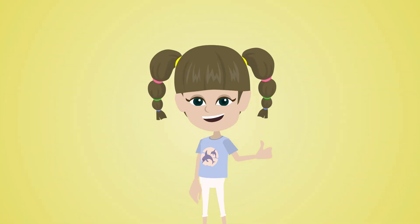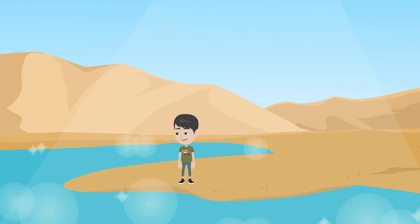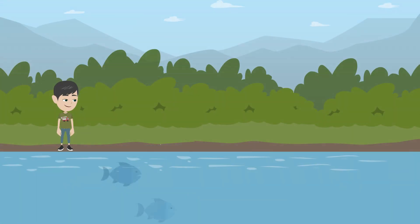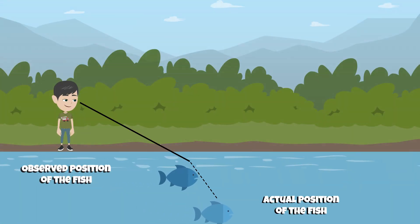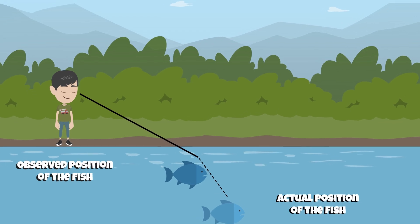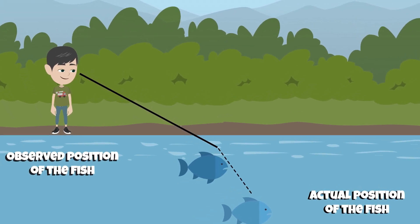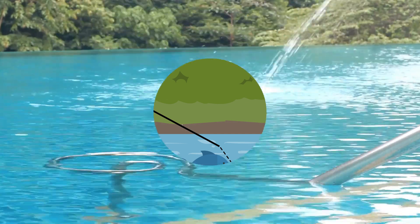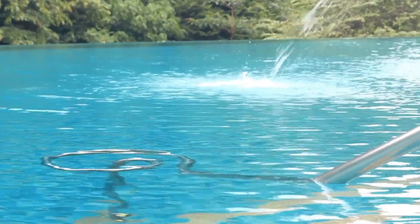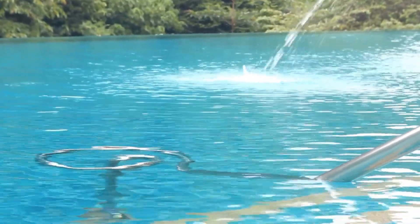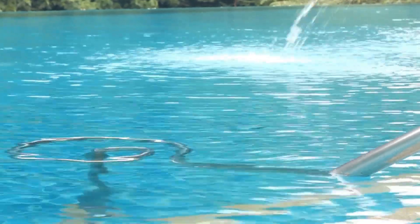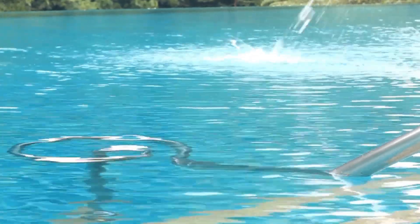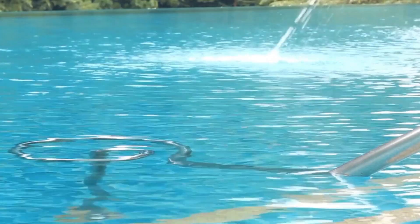So are you ready to jump into today's hands-on experiment? We've prepared a scenario where a person observes a fish in a lake. The diagram shows the actual position of the fish versus the observed position. This will help us understand how light changes direction when moving between water and air. Quick recap — refraction is the bending of light as it passes from one medium to another, and this property can make objects appear closer or farther away than they actually are.